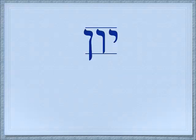We have now learned three different letters that are very similar — they're only different in height. Starting from the right, you have the yud, which is the shortest; the vav, which takes up the full space; and the final nun, which extends below the line.